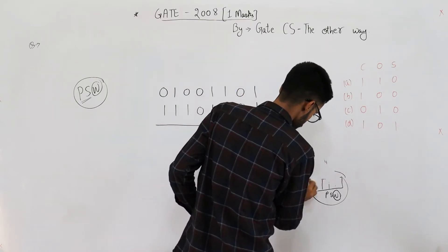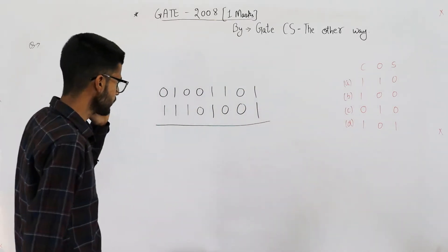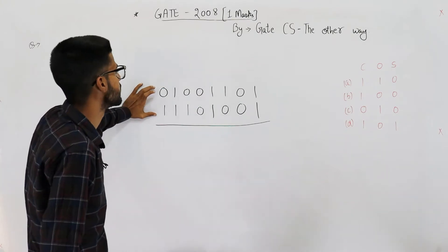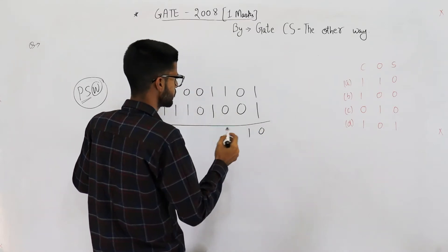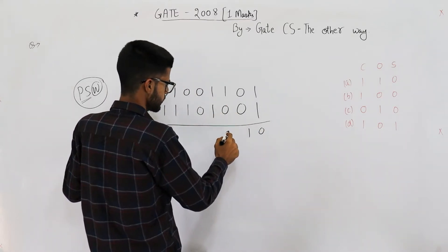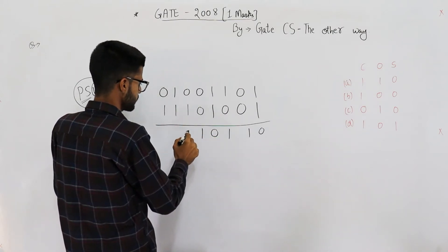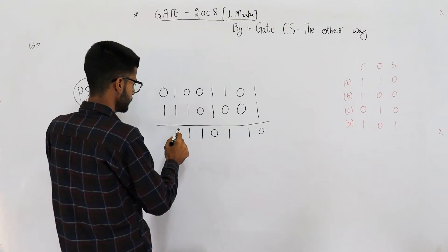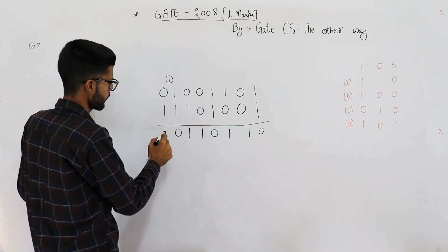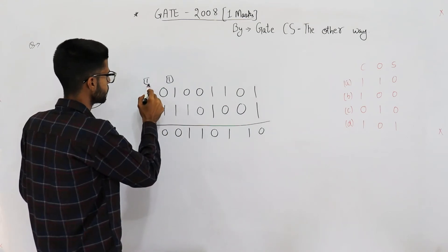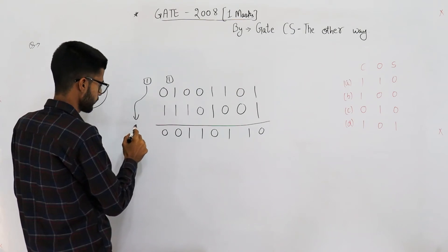I've noted down the two numbers given in the statement and we are performing an addition between them. Let's add them: 1 plus 1 is 0 with carry 1; again 1 plus 1 is 0 with carry 1; 1 plus 0 is 1; 1 plus 1 is 0 with carry 1; then 1 plus 1 is 0 with carry 1, so that carry is copied forward.